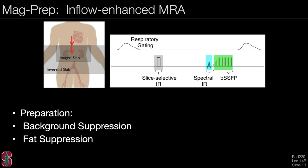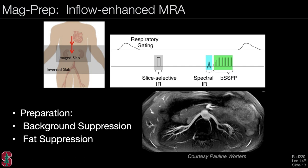Another example combines magnetization preparation approaches: inflow-enhanced magnetic resonance angiography. The preparation performs background suppression using a slice-selective inversion, waits some time, then does a spectral inversion recovery to suppress fat, then runs a balanced SSFP sequence. During this inversion time the blood flows into the slice, so ideally all static tissue is suppressed and we get a blood-selective image. The result shows renal arteries quite clearly without the use of a contrast agent—we simply take advantage of blood flowing into the slab quickly to create bright blood signal against a suppressed background.